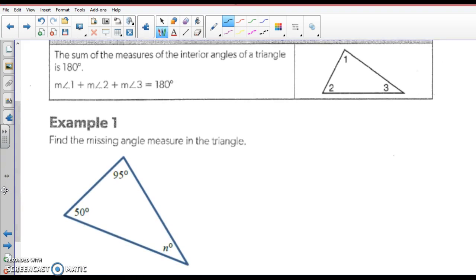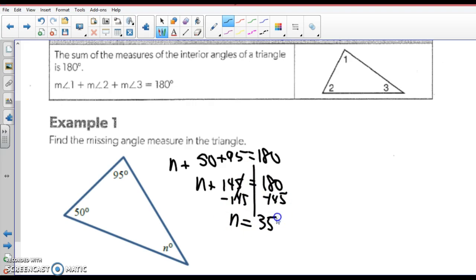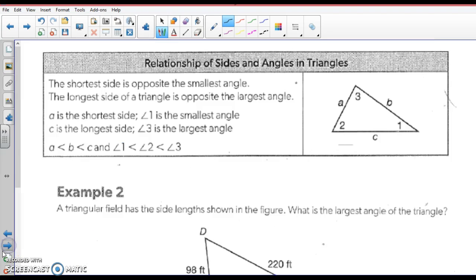So let's solve for N. N plus 50 plus 95 equals 180. Solve N plus, this will be what? 145 equals 180. Subtract 145 from both sides. So N is 35 degrees. And if I added those three out, I would get 180.